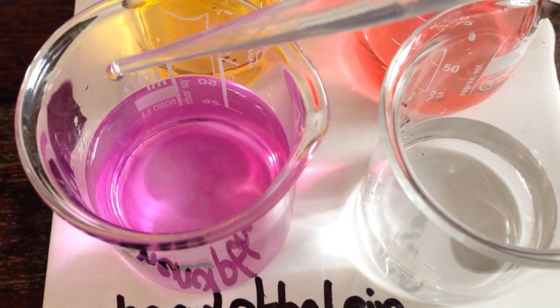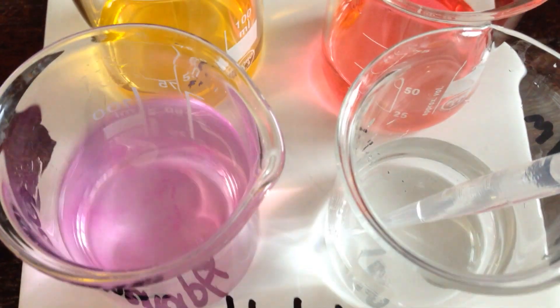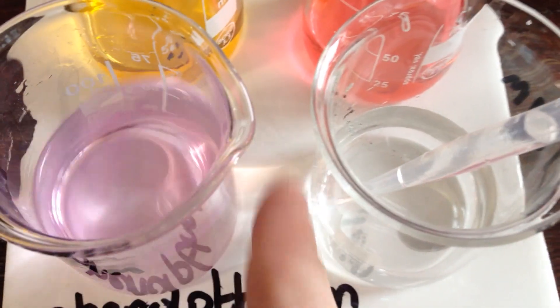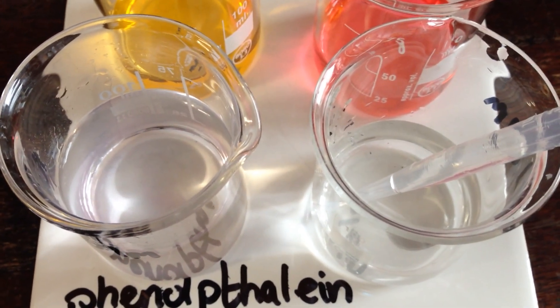Hopefully here you can start to see it's changing color. Give it a swirl. You can see it's still a bit pink. Swirl more and you can see it's permanently changed color. This is why swirling is really important.